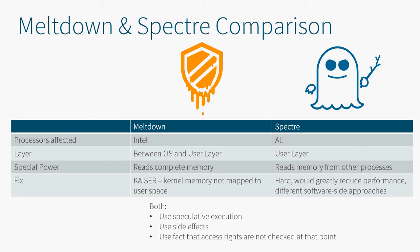What Meltdown and Spectre have in common is that they use speculative execution, which is performed by processors to speed things up. They exploit side effects that occur but are not reverted, and they use the fact that access rights are not checked at that point — because checking them would also slow down the whole processing.